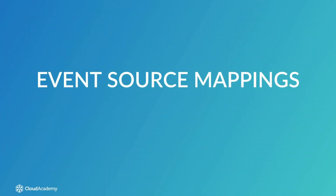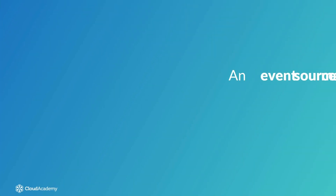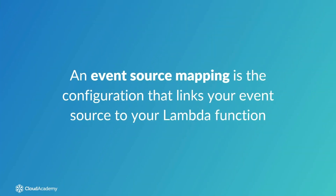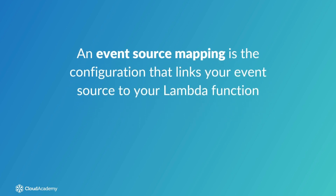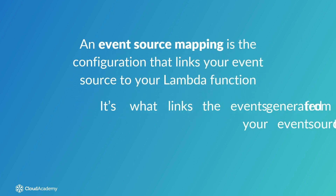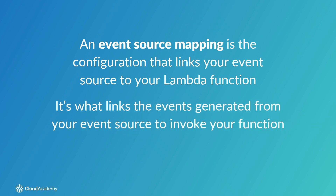An event source mapping is the configuration that links your event source to your Lambda function — it links the events generated from your event source to invoke your Lambda function. However, whether the event source is push or poll-based determines where this event source mapping is configured and stored.